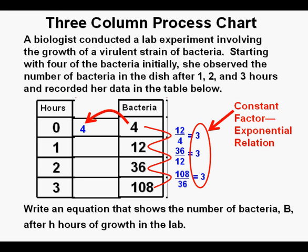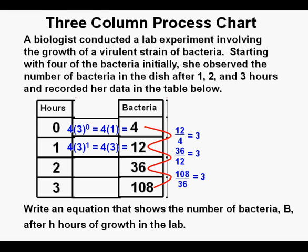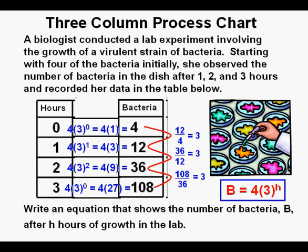To find the function to model the situation, we start with a y-intercept of 4. Next, we take the constant factor of 3 — the constant multiplier or base of an exponent — determined from our analysis. We use the input value as an exponent to the constant multiplier 3. So this will be 4 times 3 to the power of 0. Since any non-zero number to the power of 0 is 1, we have 4 times 1, which equals our output value 4. It works for input values of 1, 2, and 3 as well, so our function is b equals 4 times 3 to the power of h, where b is the number of bacteria and h is the time in hours.